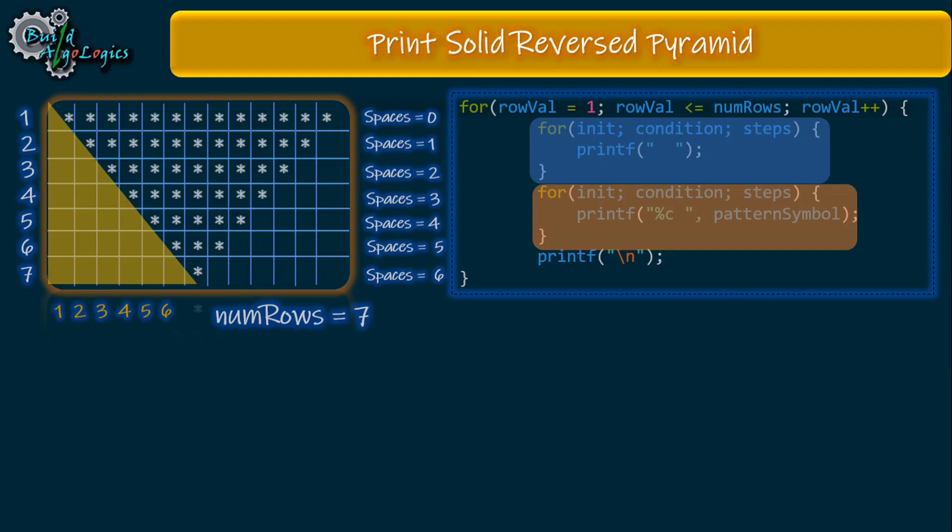We can use our condition as column value is less than row value. For row value one, this loop will not run because column value is one and one is not smaller than one, and this is the behavior that we want. For row value two, this loop will run one time as one is smaller than two. Similarly for row value three, this loop will run two times, and so on.